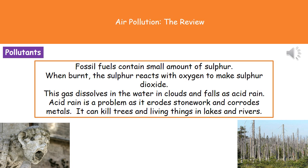Fossil fuels also contain small amounts of sulfur, so when we burn them, the sulfur reacts with oxygen to produce sulfur dioxide. Sulfur dioxide travels up into the atmosphere and dissolves in the water in clouds, generating acid rain as it falls. Acid rain is a significant problem — it can erode stonework and corrode metals, damaging buildings. It can also kill trees. If it accumulates in lakes and rivers, it changes the pH to the point that it becomes too acidic for fish to survive, and we can see entire lake fish populations dying as a result.